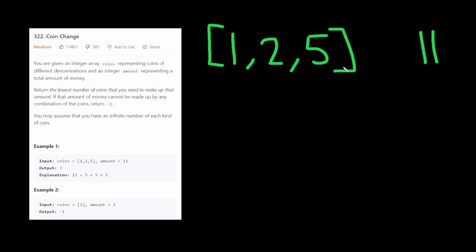So we're given an array of coins, and we're given an amount, like 11 here, and we have to figure out the fewest number of coins that we need to make up that amount. And we can assume we have an infinite number of coins, and if we can't make up the amount, we have to return negative 1.